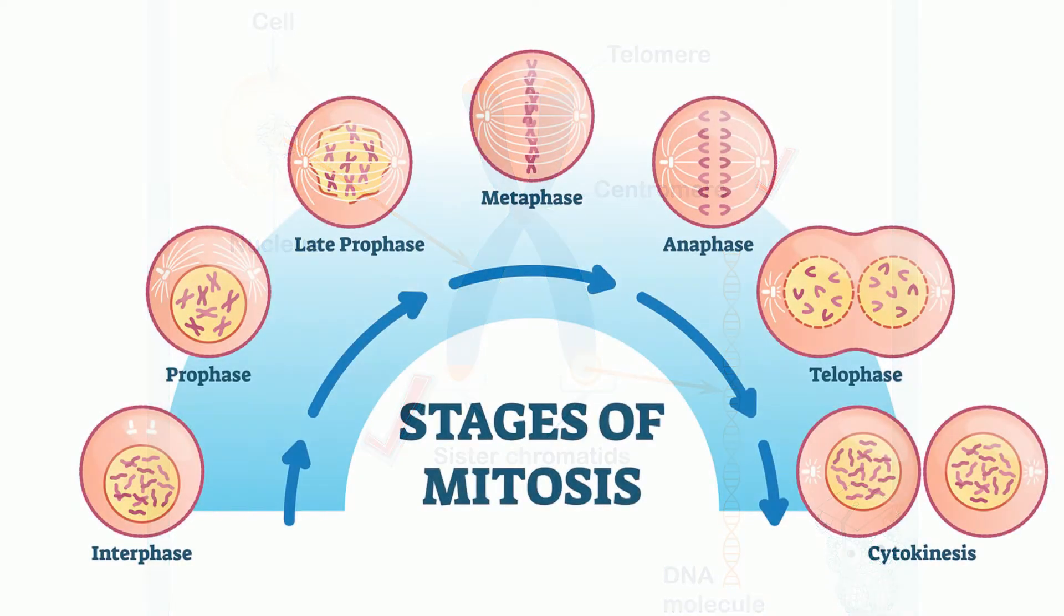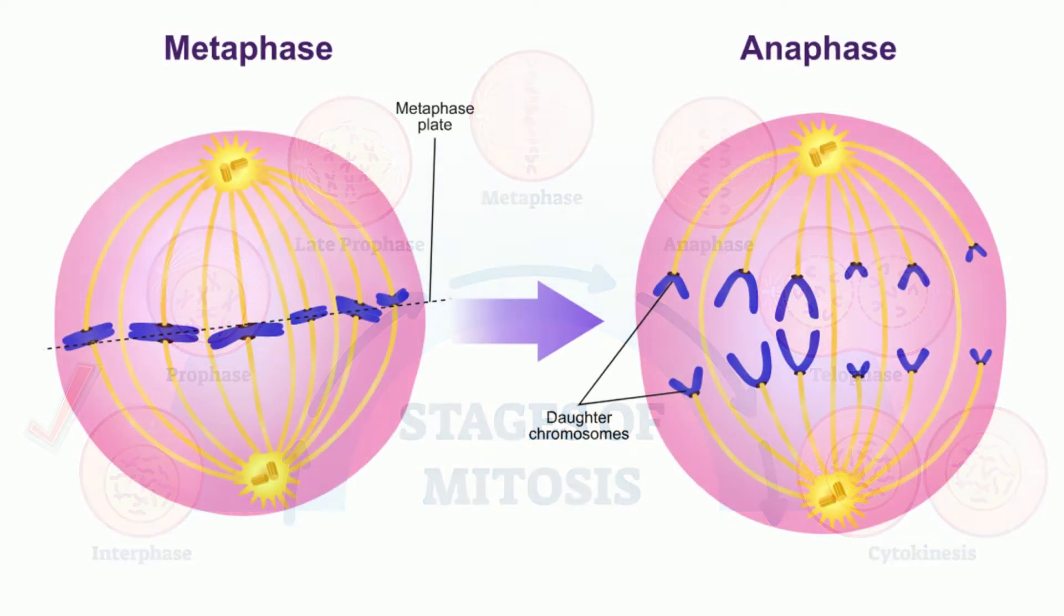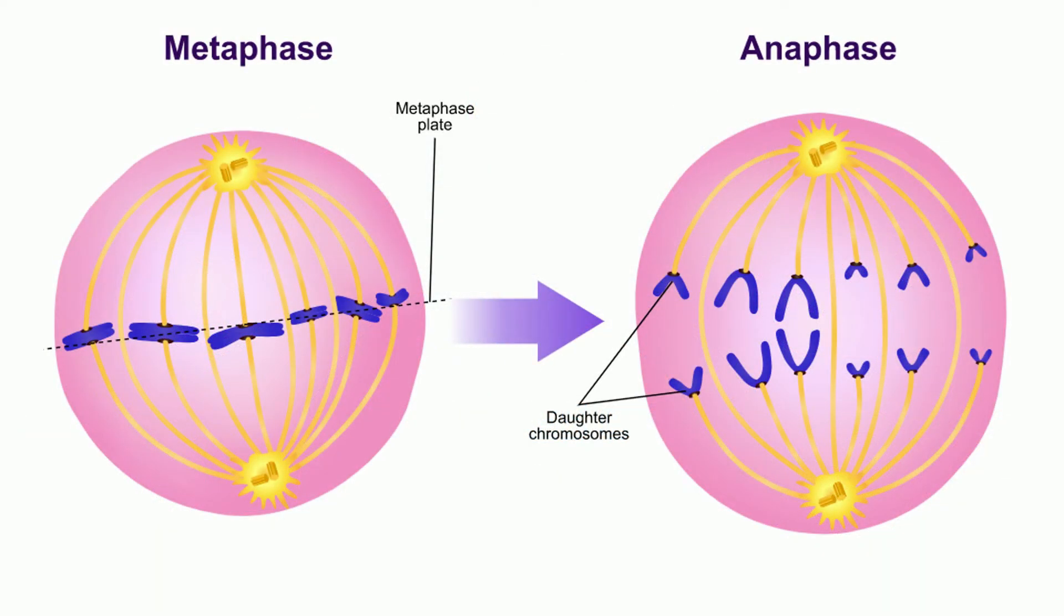A full set of sister chromatids is created during the S phase of interphase, when all the chromosomes in a cell are replicated. The two sister chromatids are separated from each other into two different cells during mitosis. During mitosis, the sister chromatids separate into daughter cells, but are now referred to as a chromosome.